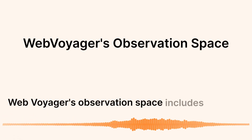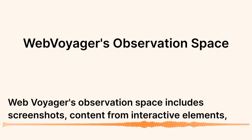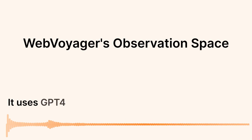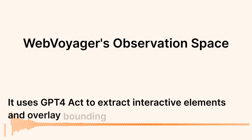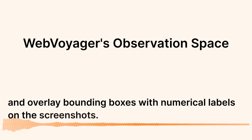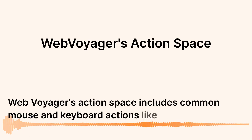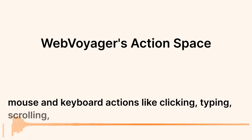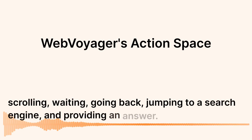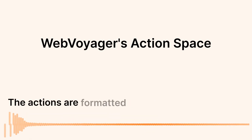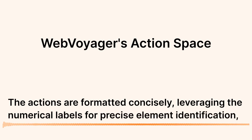Web Voyager's observation space includes screenshots, textual content from interactive elements, and error messages. It uses GPT-4-ACT to extract interactive elements and overlay bounding boxes with numerical labels on the screenshots. Its action space includes common mouse and keyboard actions like clicking, typing, scrolling, waiting, going back, jumping to a search engine, and providing an answer. The actions are formatted concisely, leveraging the numerical labels for precise element identification.